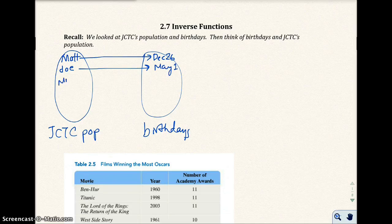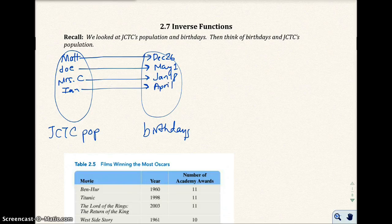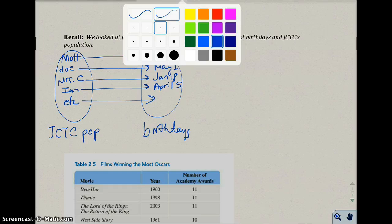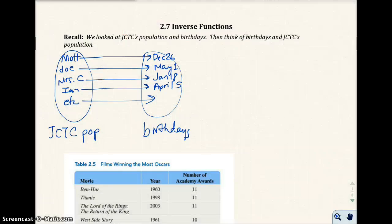Type in Mrs. Chingaris, we'd only get one birthday. And keep on going — Ian will have one birthday. So we know that when we type in someone's name or someone in the population, we would only get one birthday out. So we know that every input only yielded one output. That would be a function.